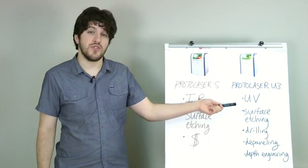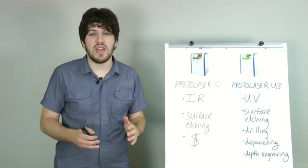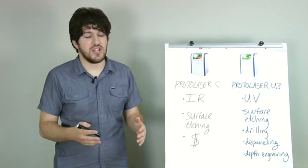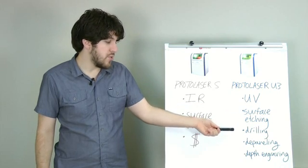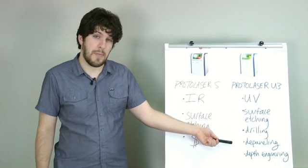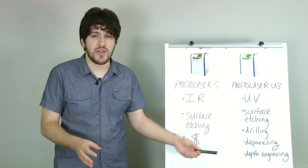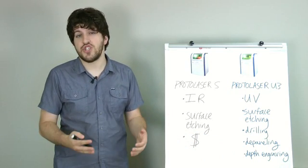Looking at the Protolaser U3 with its ultraviolet laser source, the great thing about UV is that it is proficient at a variety of circuit board applications. So not only can you create circuit traces and spacing, but you can also drill, depanel, and use a controlled ablation process for depth engraving. This is useful for skiving and pocket creation for embedding chips.